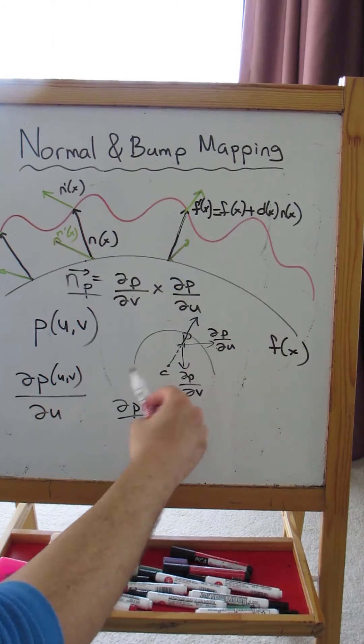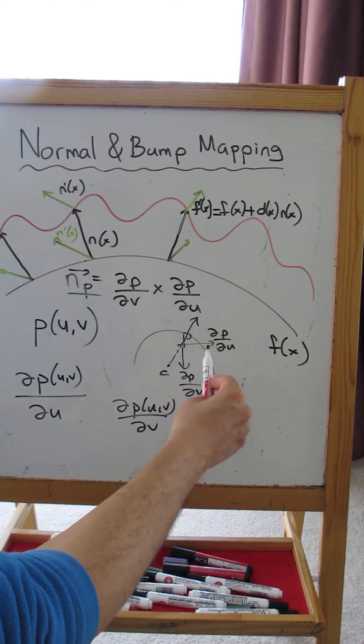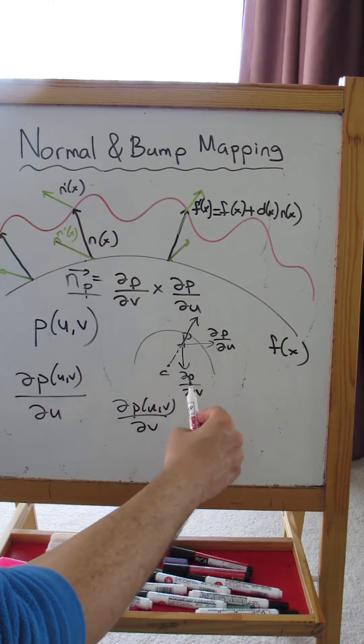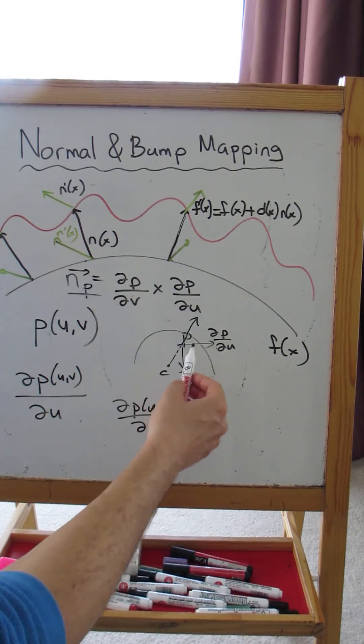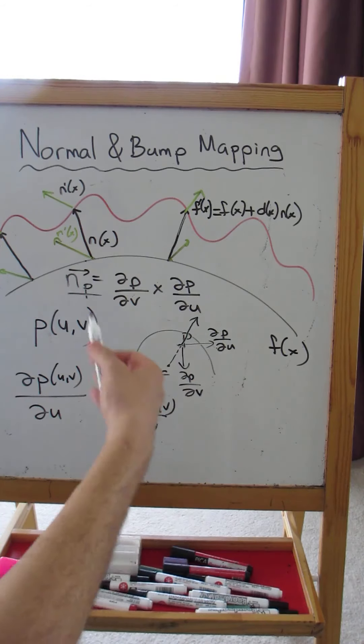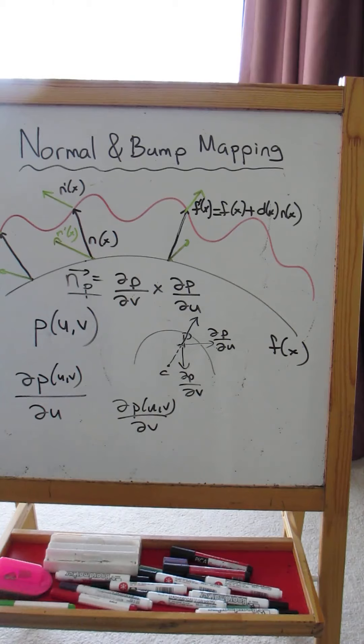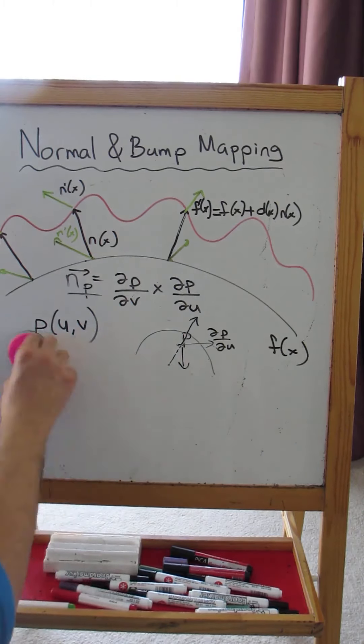But we could have done it this way also. We could have found how the position on the sphere changes with respect to two vectors on the tangent plane, with respect to dP/dv. So we basically find the two tangent vectors at the point and then take the cross product to compute the normal vector. So how are we going to make use of this now?